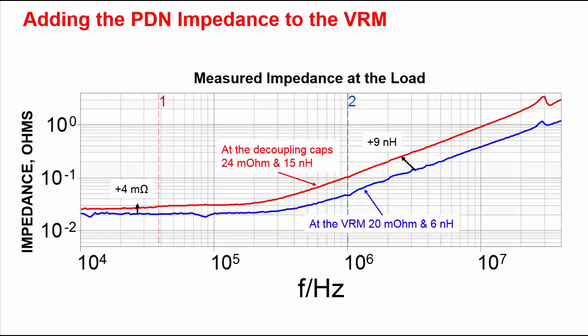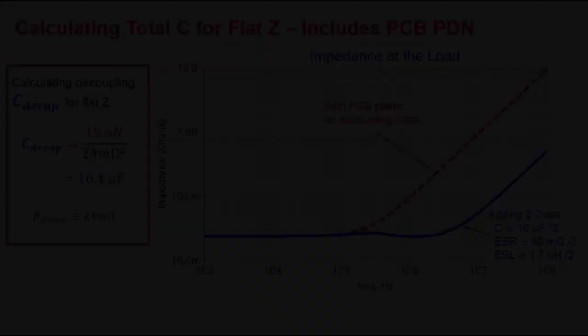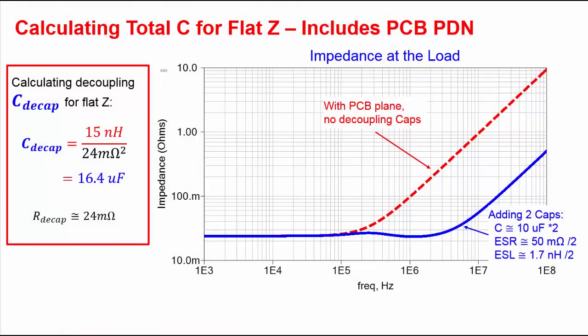Adding the VRM, printed circuit board, and connector pins results in a total of 24 mOhms and 15 nH. The measured VRM resistance is 20 mOhms; adding 1 mOhm for the pins and 3 mOhms for the printed circuit board plane results in a total of 24 mOhms to reach the load. The VRM inductance alone is 6 nH, and adding 7 nH for the plane and 2 nH for the connector pins results in 15 nH seen by the load. Applying our simple equation using L and R at the end of the plane results in a decoupling capacitor of approximately 16 mF with an ESR of 24 mOhms.